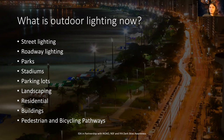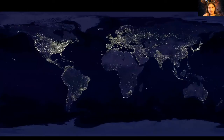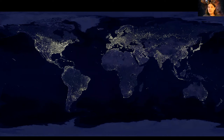As technology progressed, so did our advancement in light. As you can see in this background image, light is starting to invade all these different areas where it normally didn't go. Here is a beautiful map of the world at night — it may look pretty, but the reason you're seeing those lights is because that light has traveled up to space. That's energy and electricity being shot up into space and wasted — a valuable resource that could be directed toward the ground.